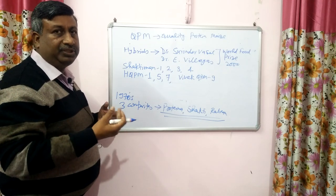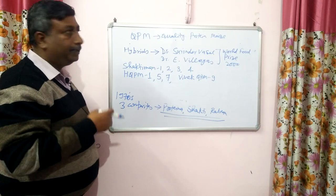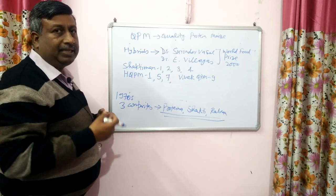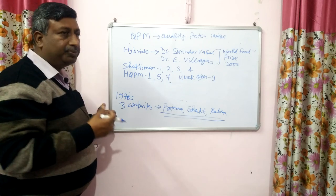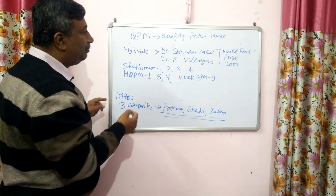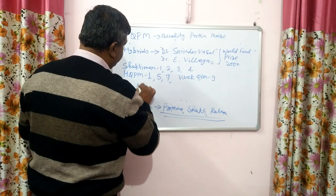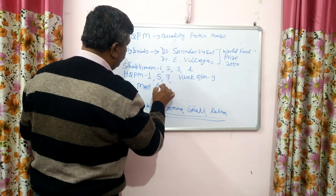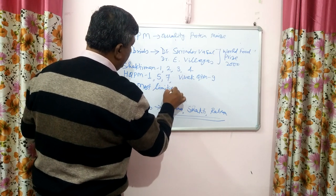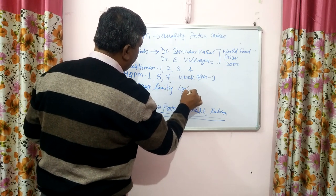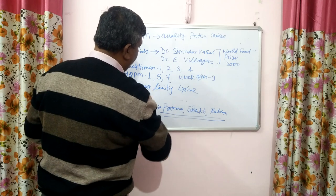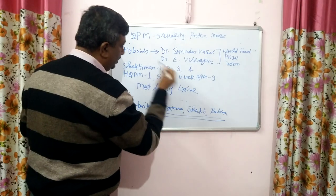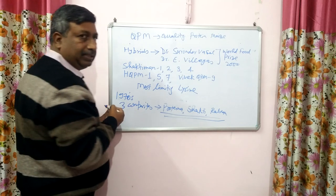In general, questions asked include: normal maize is deficient in — answer is lysine and tryptophan; quality protein maize is rich in — lysine and tryptophan. If asked which is the most limiting amino acid, the answer is lysine. Although both lysine and tryptophan are deficient, the most limiting is lysine.